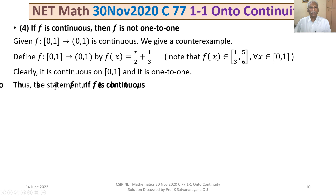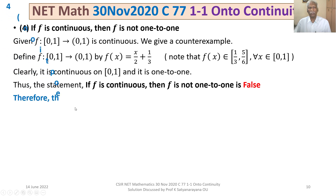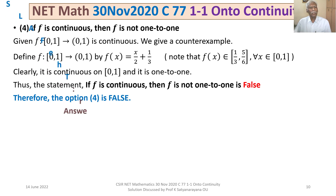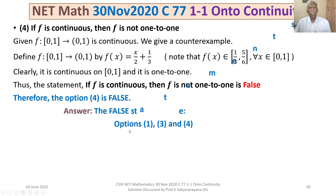Thus, the statement in option 4 — if f is continuous, then f is not 1-to-1 — is false. Therefore, option 4 is false. Finally, our answer is that the false statements are options 1, 3, and 4.